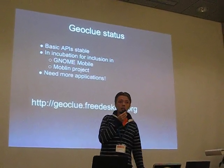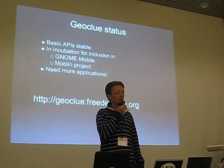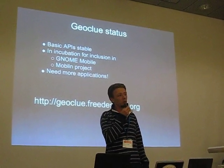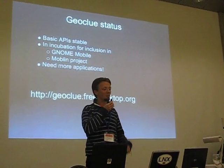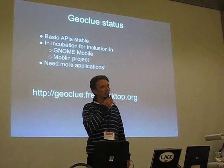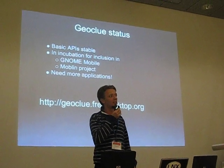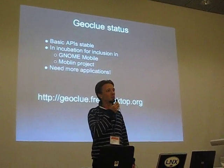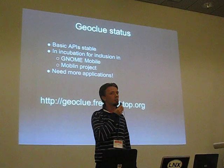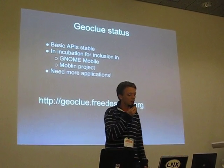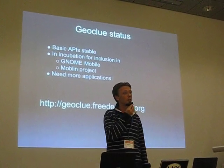At the moment, it's very usable. The basic APIs are stable. We would like to have more relevant applications — in that sense, there's no liftoff yet. Both GNOME and the Maemo project are sort of keeping GeoClue in incubation. Geo applications will come, and I'm sure GeoClue will bring those, along with desktop distributions. Check it out on the website. Thank you.